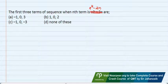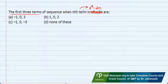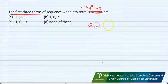The sequence and series practice questions we are doing. This is the question we are discussing in front of you. The first three terms of the sequence when nth term is given. The nth term formula is given first, we have to find three terms. In any sequence, when you have the nth term formula.